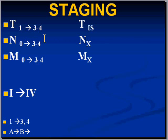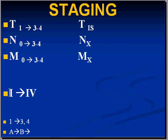Sometimes these numbers go up to 3 or 4, or even higher. Sometimes you'll see the term IS after a T, referring to the fact that the malignancy is in situ. Sometimes you'll see the subscript X after an N or an M, referring to the fact that the degree of node or metastatic spread has not been assessed or is unknown. Sometimes, especially with lymphomas, staging is in terms of Roman numerals from 1 generally to 4.